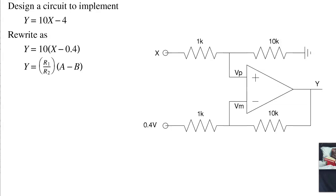Now matching terms. R1 over R2 is 10. X is A. B is 0.4. So plugging in 0.4 for B, A goes to X, and the ratio is 10 to 1. That'll give you Y is 10X minus 4.